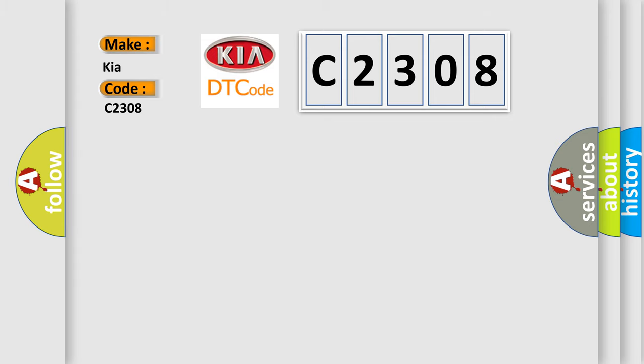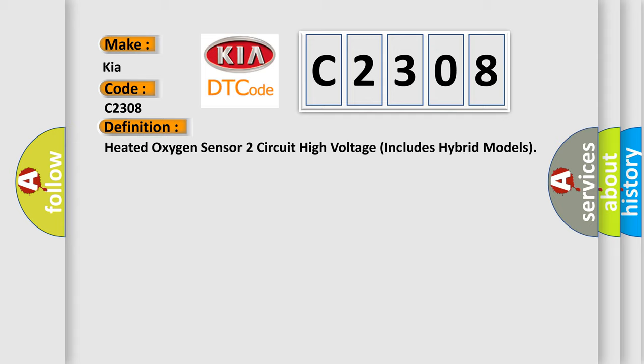The basic definition is Heated Oxygen Sensor 2 Circuit High Voltage, includes hybrid models. And now this is a short description of this DTC code.